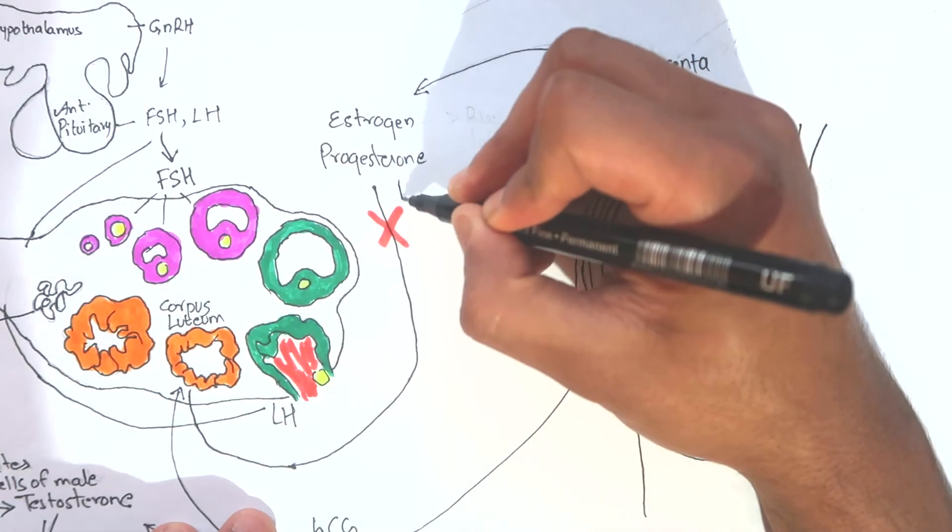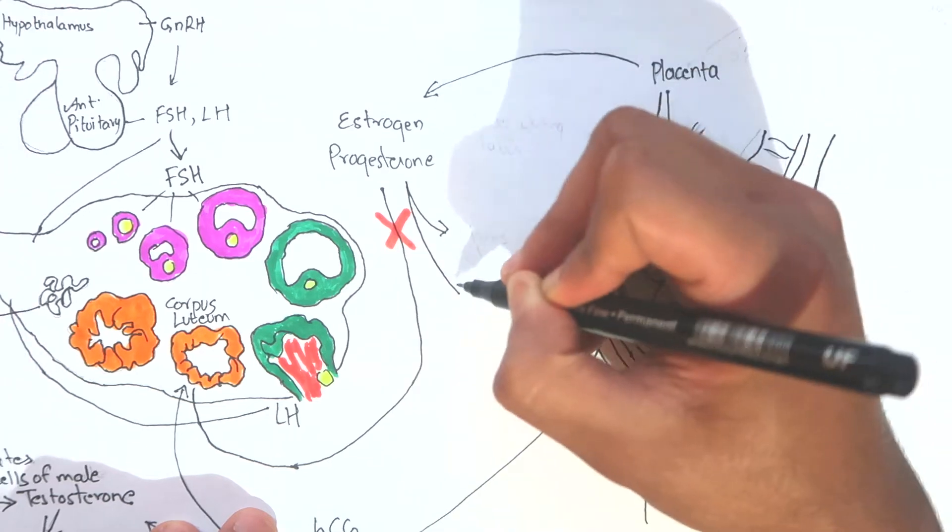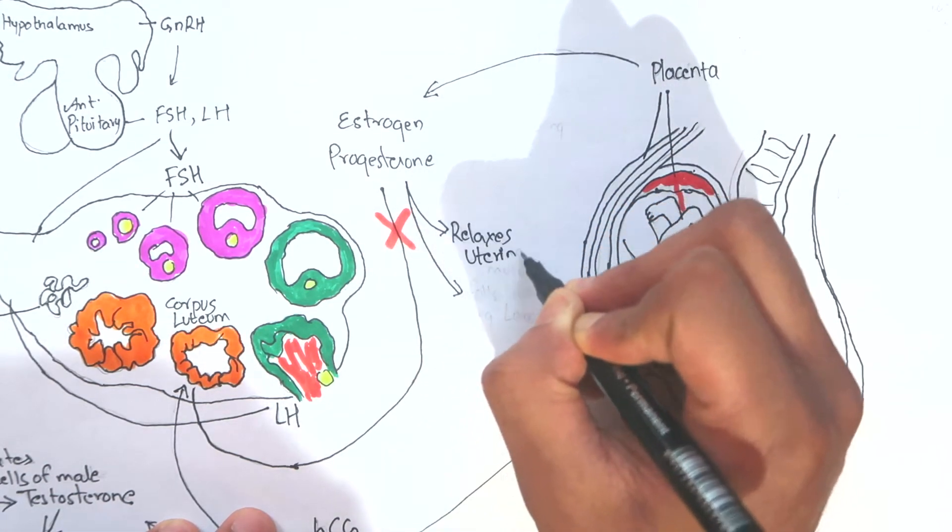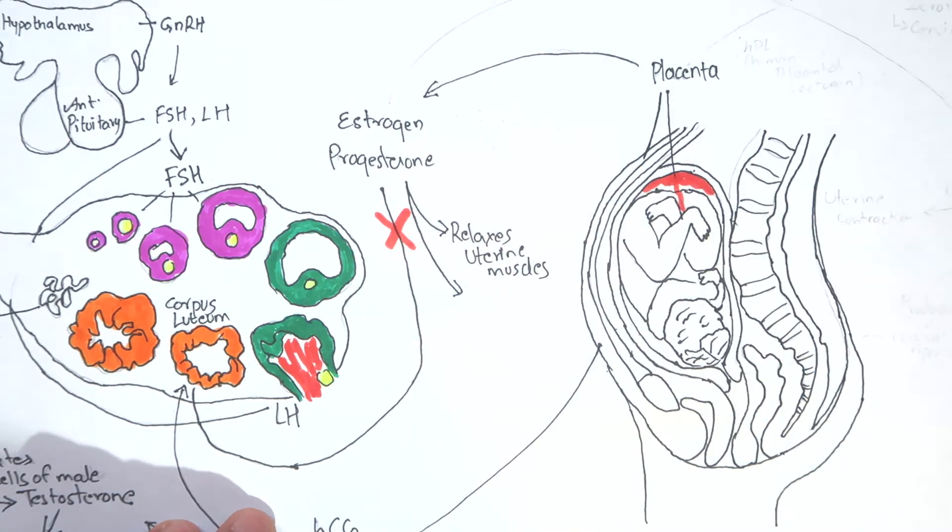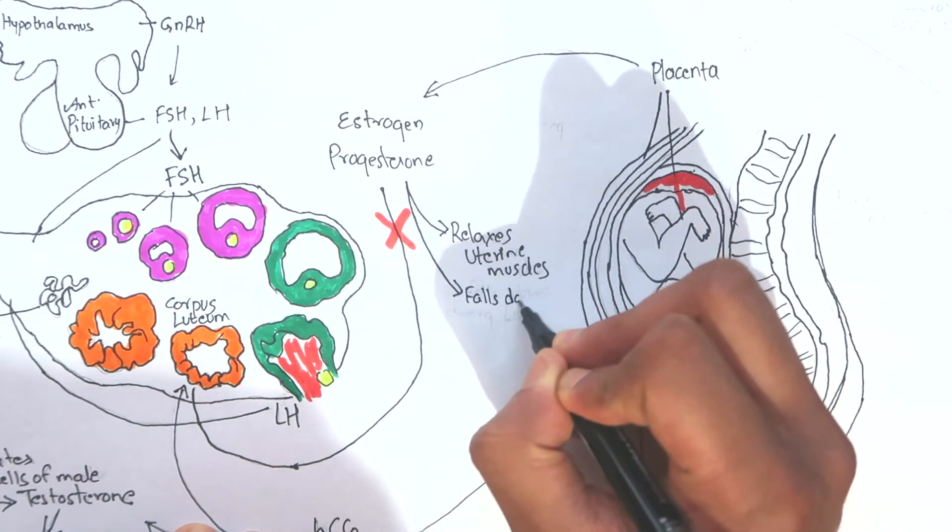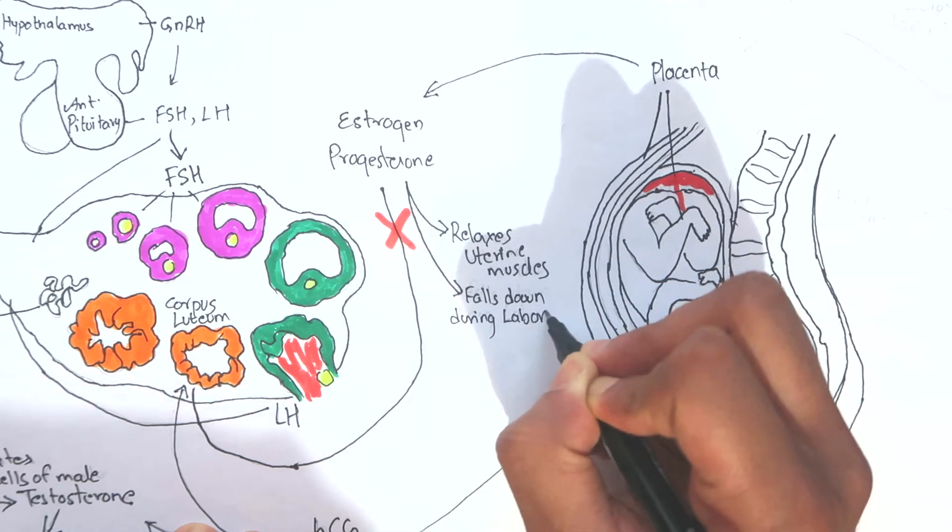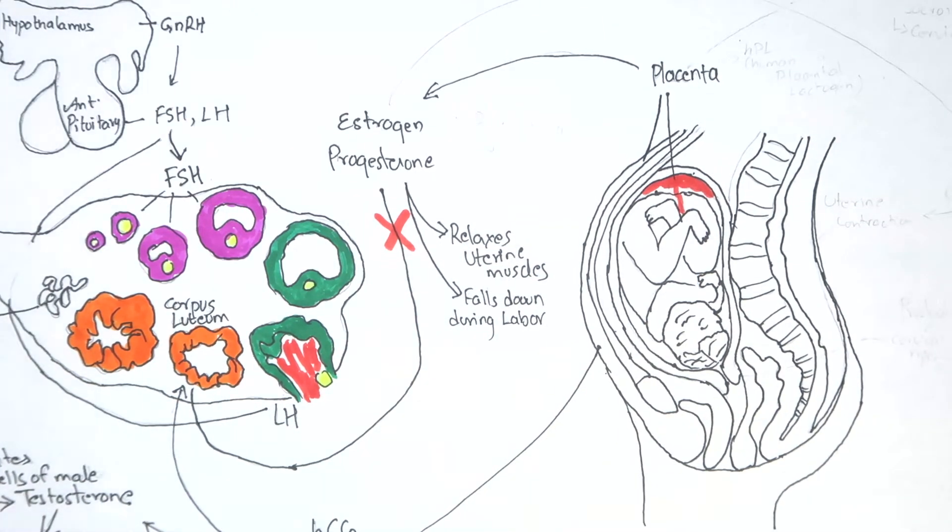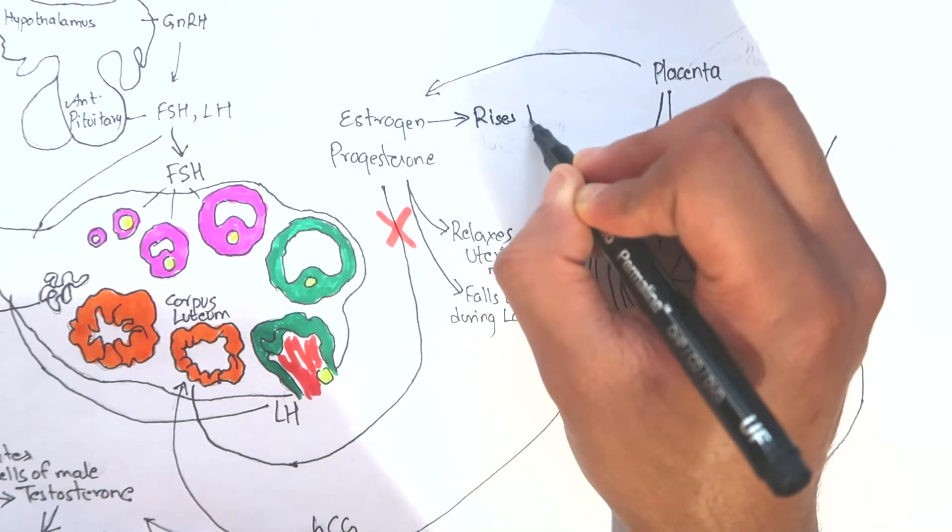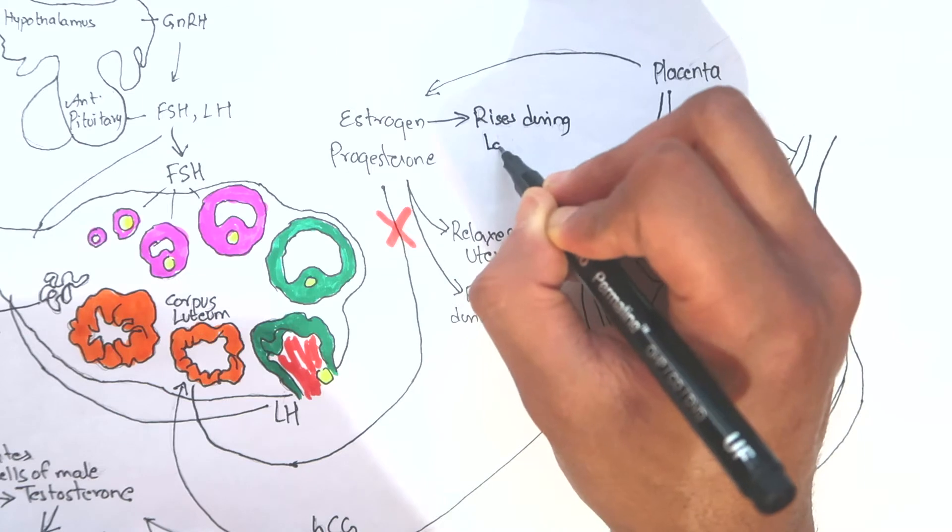Progesterone inhibits the myometrial contraction by relaxing the uterine muscles to prevent premature expulsion of fetus. However, during labor, its level falls down. The estrogen, however, rises due to the formation of estriol which is a form of estrogen during childbirth.